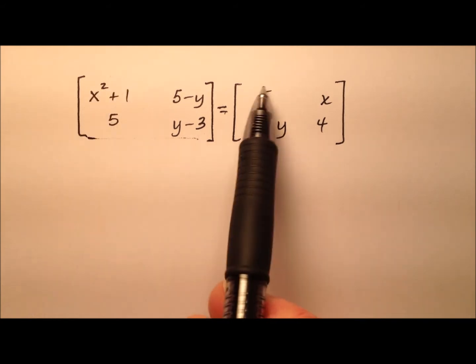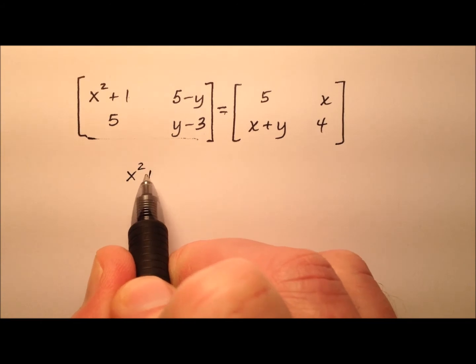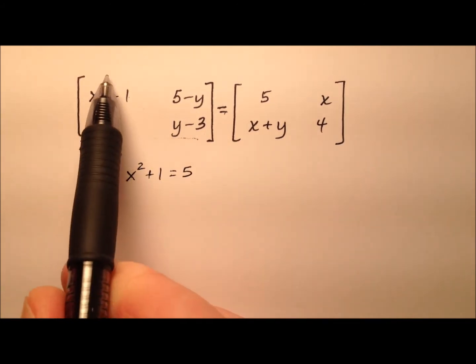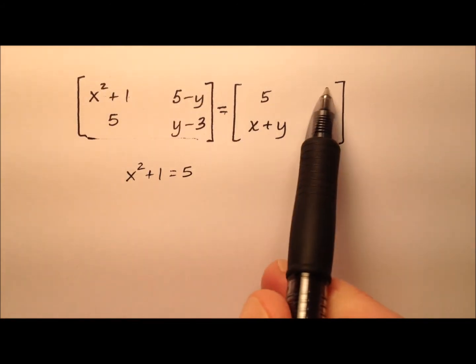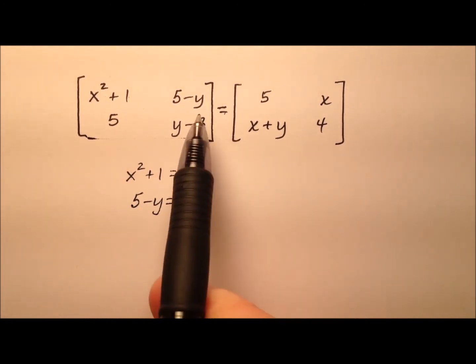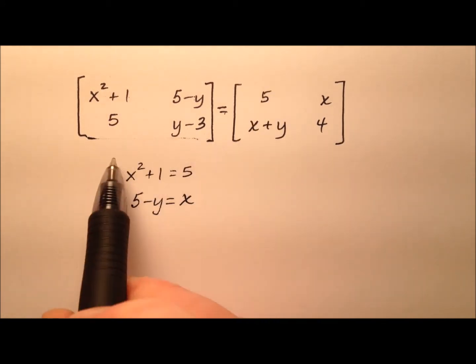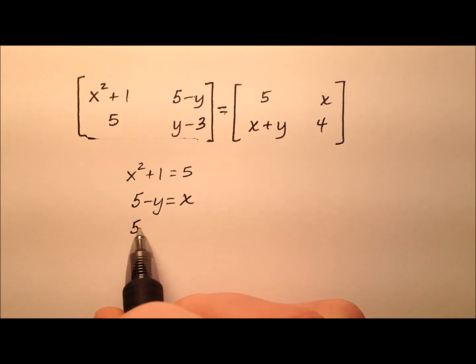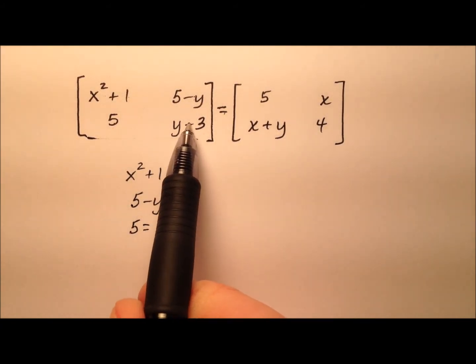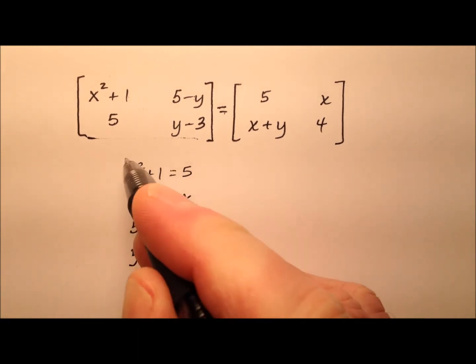First row, first column: I know that x squared plus one equals five. First row, second column: I know that five minus y equals x. Those are just corresponding entries. Second row, first column: I know that five equals x plus y. And finally, second row, second column: I know that y minus three equals four.